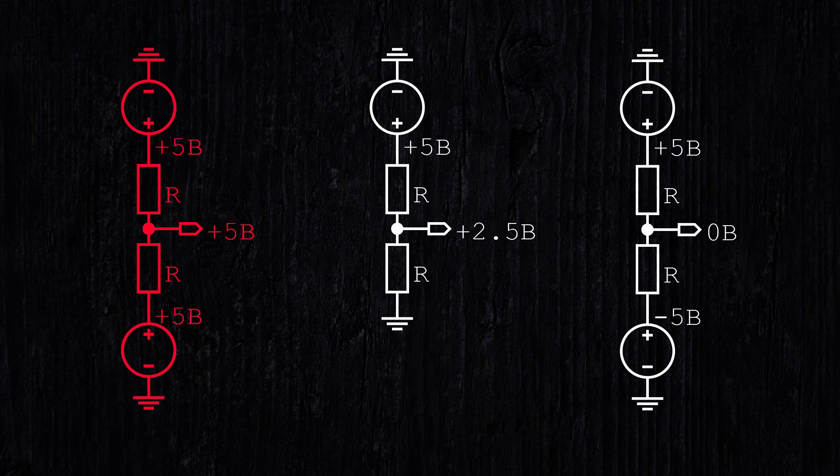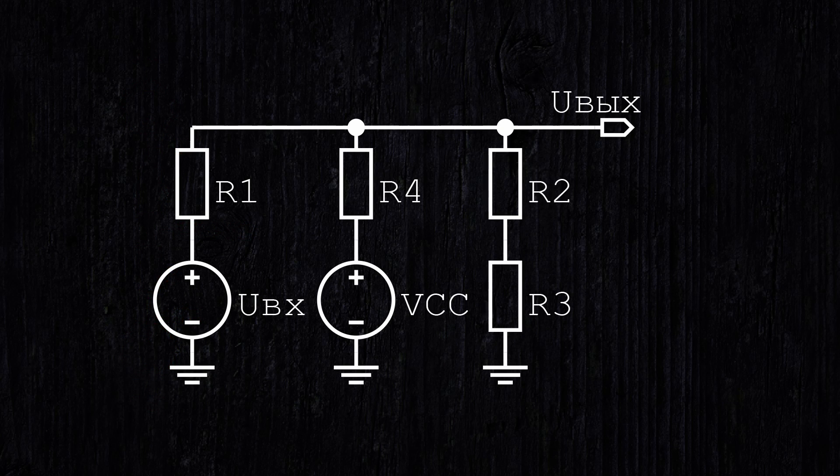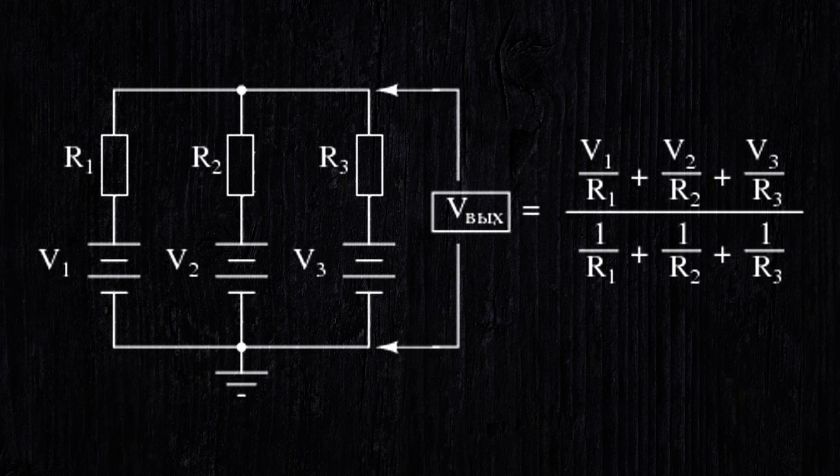In the general case, Millman's theorem is used here, according to which it is possible to calculate the voltage common for all branches. In our case, the total voltage of the circuit will be known, but the input voltage will need to be calculated using this formula.